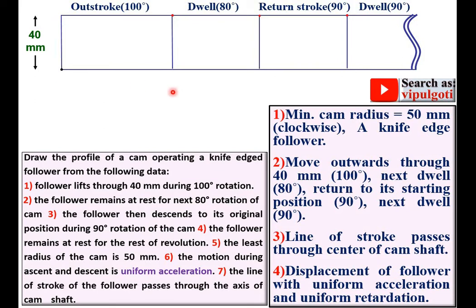Now divide the outstroke into 6 equal parts and give the name as 0, 1, 2, 3, 4, 5, 6. And draw the vertical lines passing through all these points.